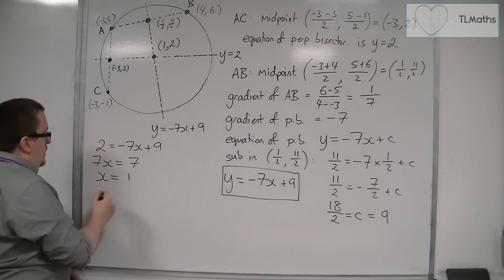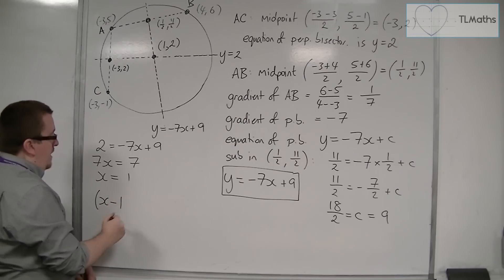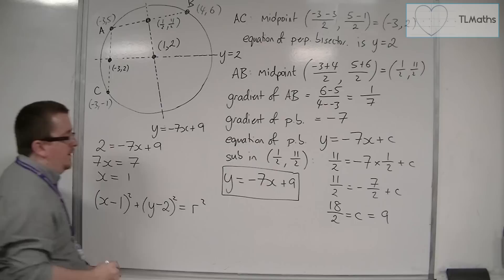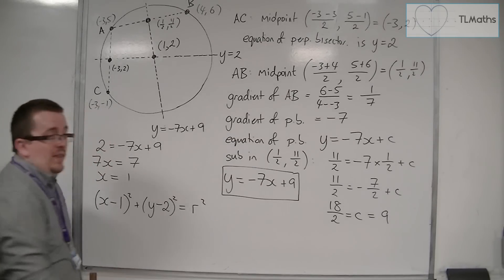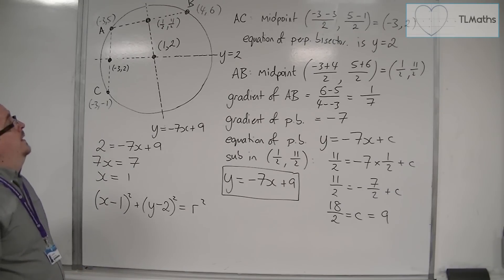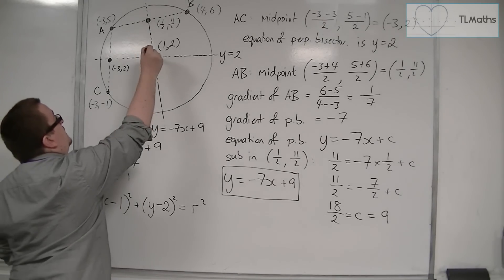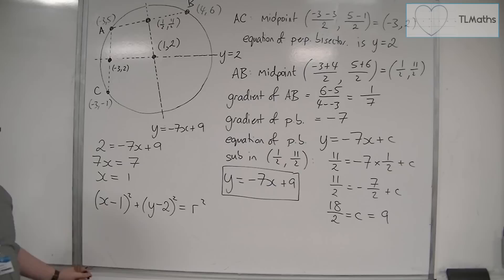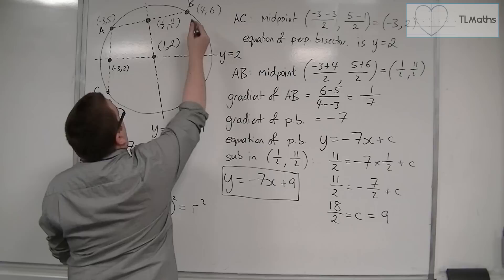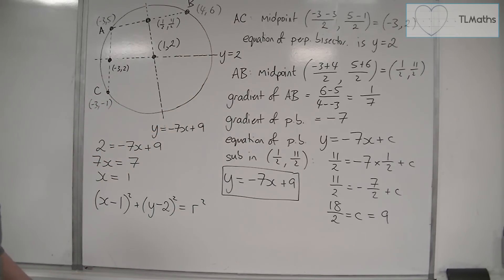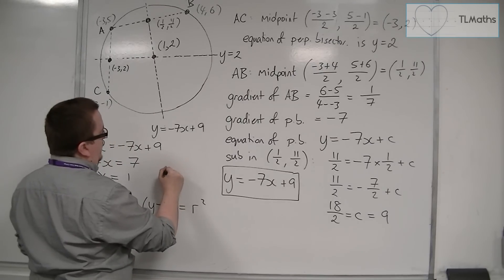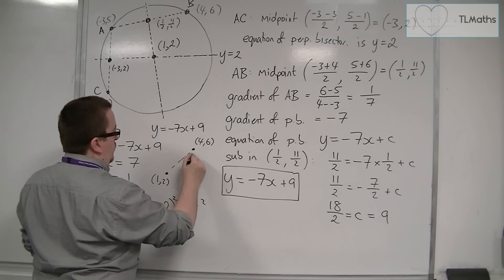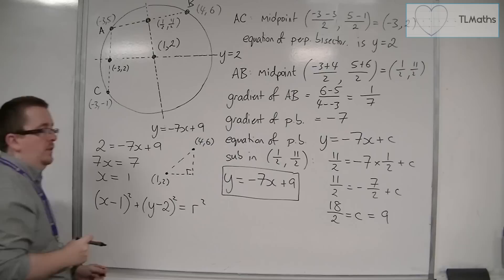Now I know that the equation of the circle is x minus one squared plus y minus two squared equals r squared. The only thing left to find is r, the radius. To do that, I find the distance from the centre to any of the three points. The easiest is probably four, six, because there are no negatives to deal with. So I'm looking at the distance from one, two to four, six, forming a right-angled triangle and using Pythagoras.